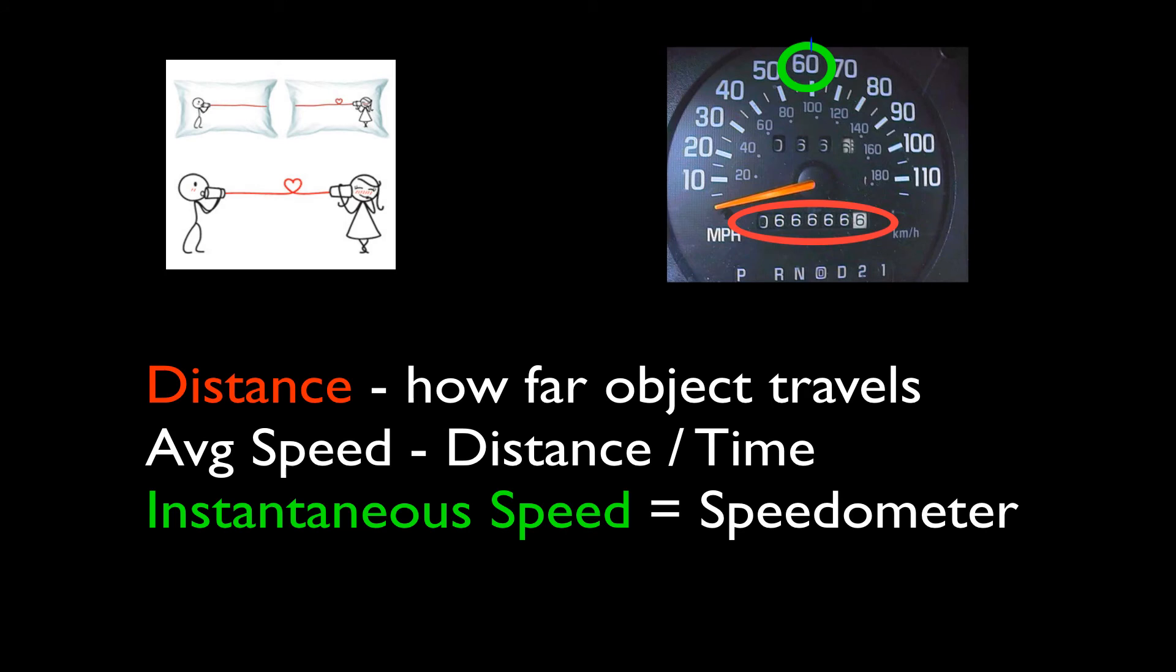In this unit, we have two important scalar quantities, actually three. Again, numbers that have size but no direction. And they are distance, how far an object travels. You see that odometer. That tells you how far the car has traveled in total, but it doesn't tell you where it's gone or anything about its direction.